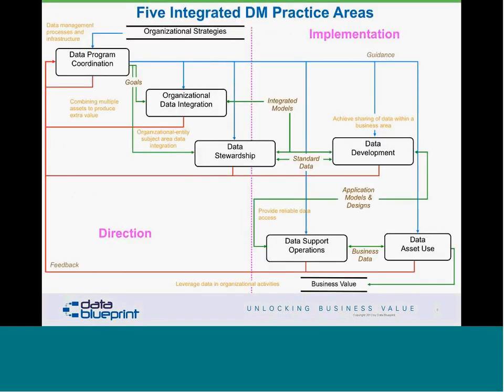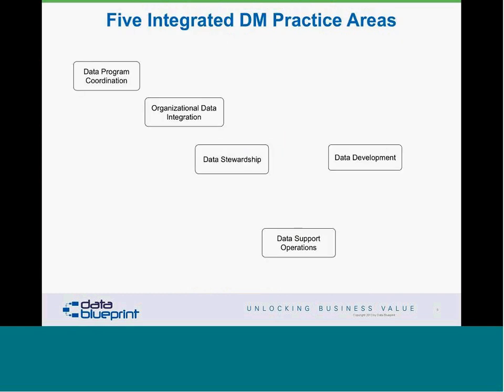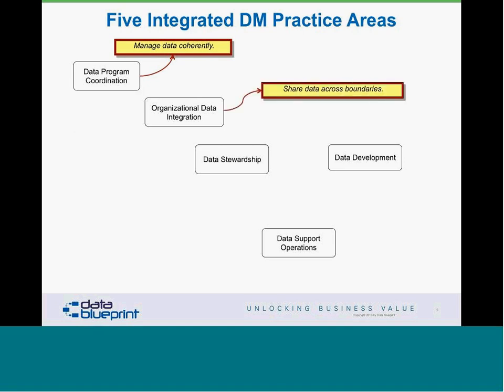Most people are unaware that data management is a combination of five integrated data management practice areas. There are five areas: first, data program coordination — the idea that we need to manage our data coherently. Second, organizational data integration — sharing data across boundaries between programs, parts of the organization, or between organizations — in a controlled and governed manner. Third, data stewardship — unless we make it personal, it's everybody's problem, which usually means it's nobody's problem.